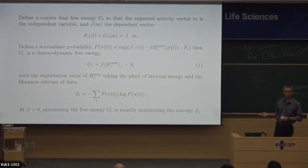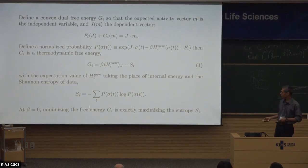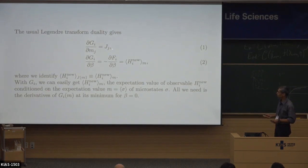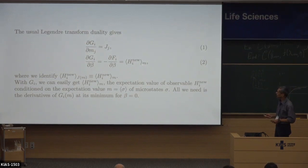If we set beta to zero, G is just the negative of the entropy. So minimizing the free energy G is exactly the same as maximizing the entropy S. The Legendre transform duality gives us: dG/dm_j = j, and dG/d_beta = -dF/d_beta = -<H>. This comes from the fact that G + F = j·m.